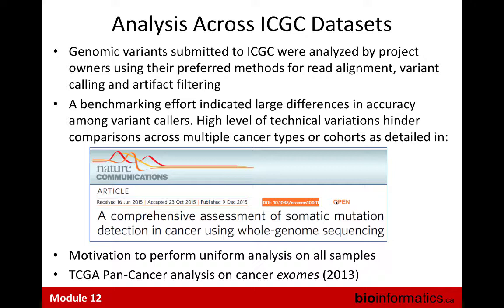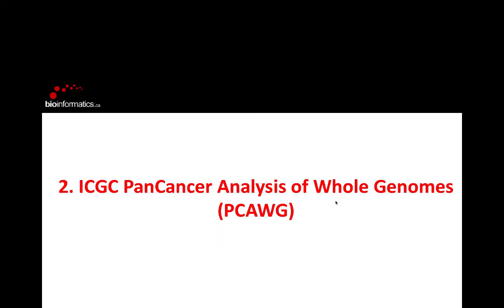To do uniform analysis, we had to completely reanalyze all data from raw sequencing reads — completely realign and use the same variant calling pipeline for all the data. This was already done by TCGA for the pan-cancer analysis on cancer exomes, published back in 2013. For ICGC to do something new, we decided to do a uniform analysis in whole genomes — the pan-cancer analysis of whole genomes, which we call PCAWG.